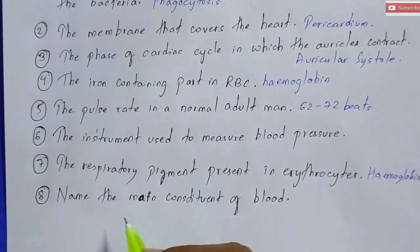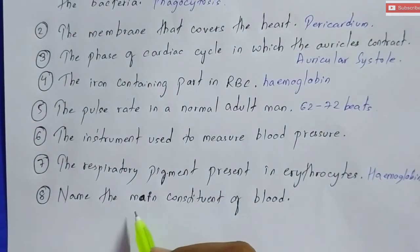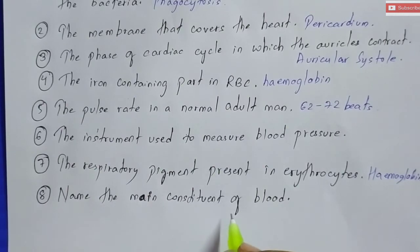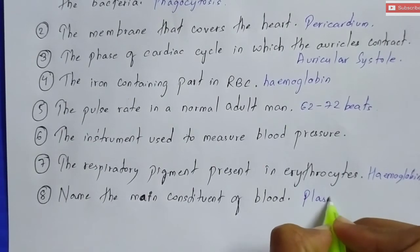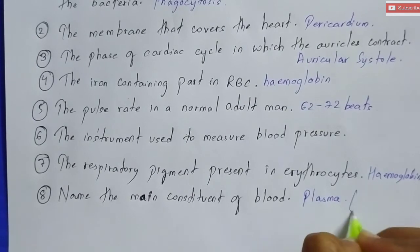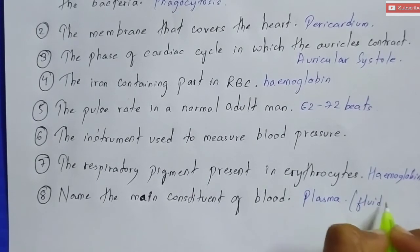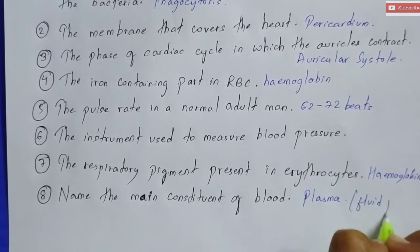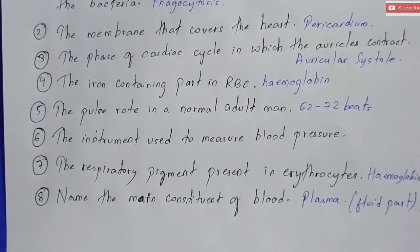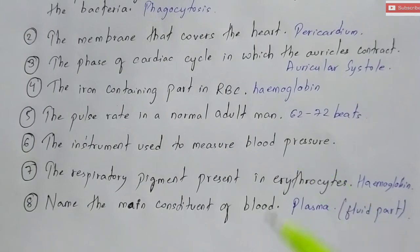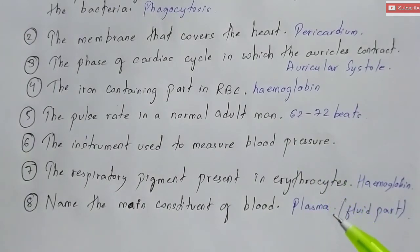The next and last question: name the main constituent of blood. The main constituent of blood is plasma. This is the fluid part of the blood — you must remember that. The constituent of plasma is 55 to 60 percent.